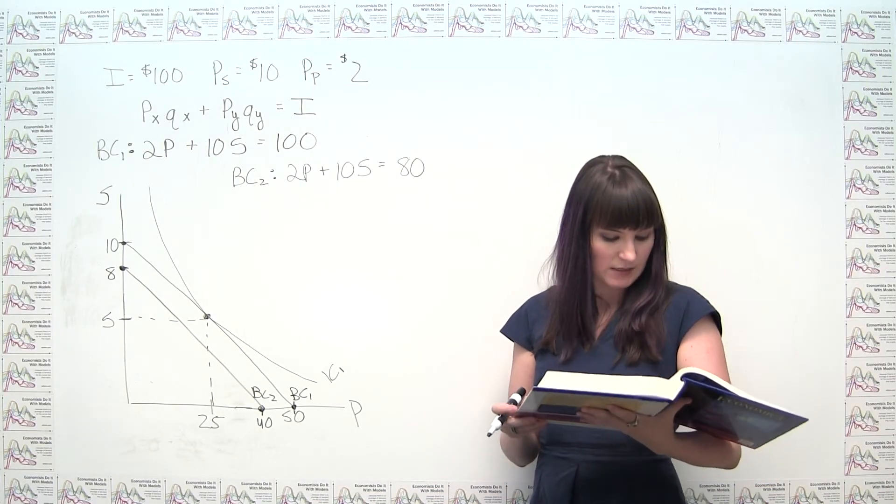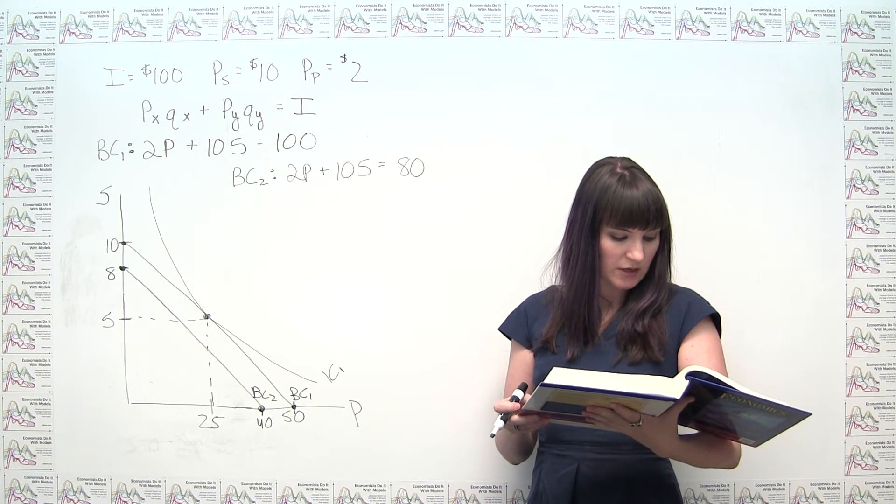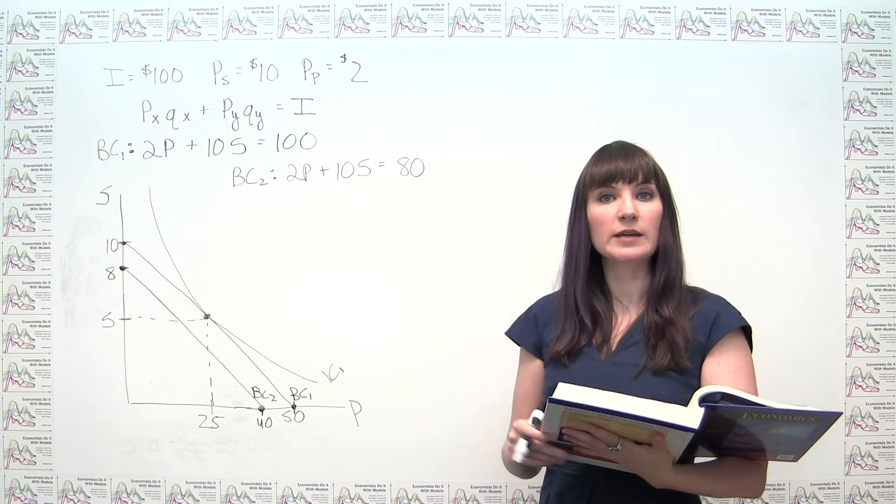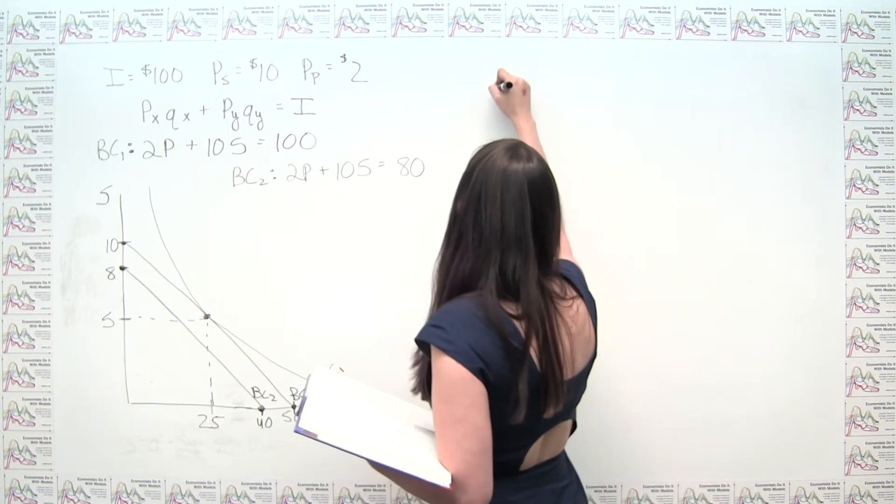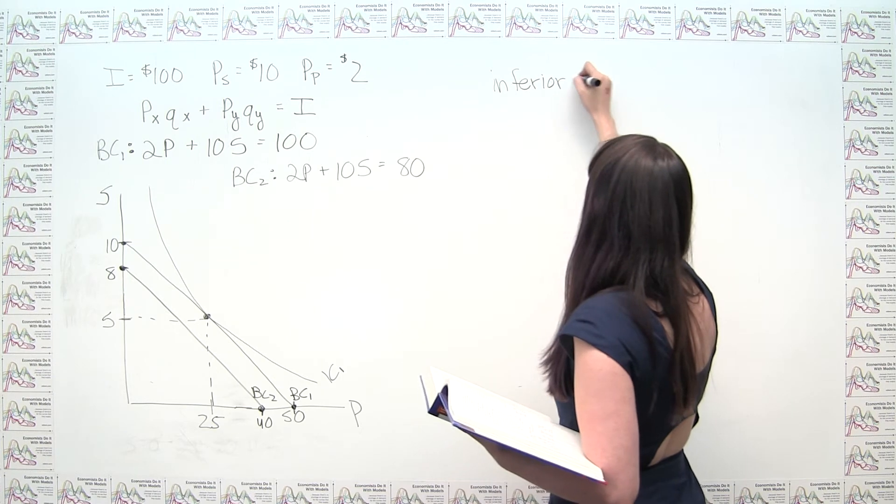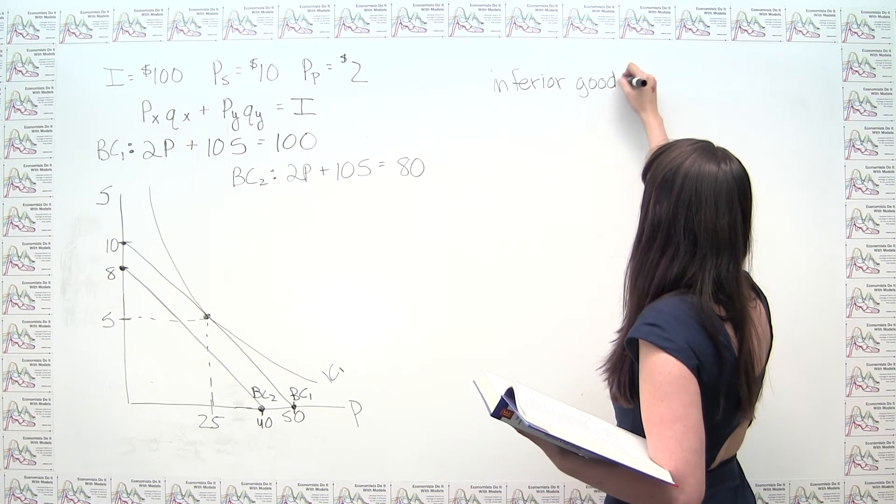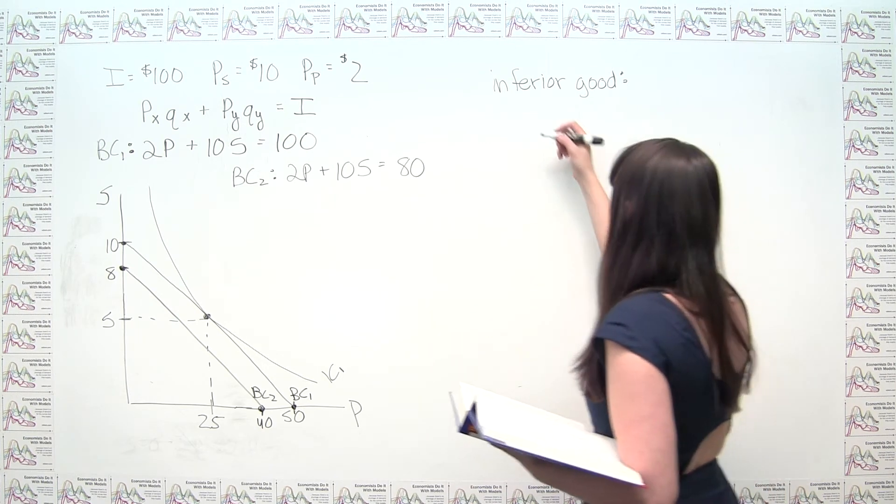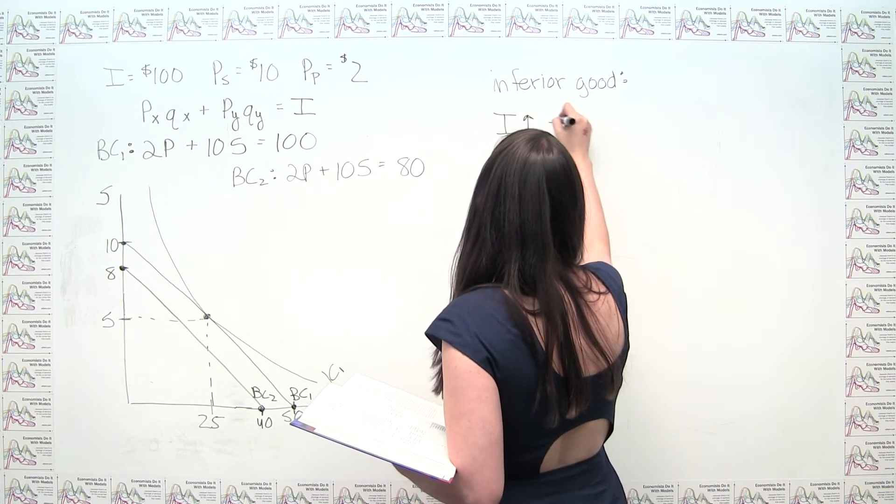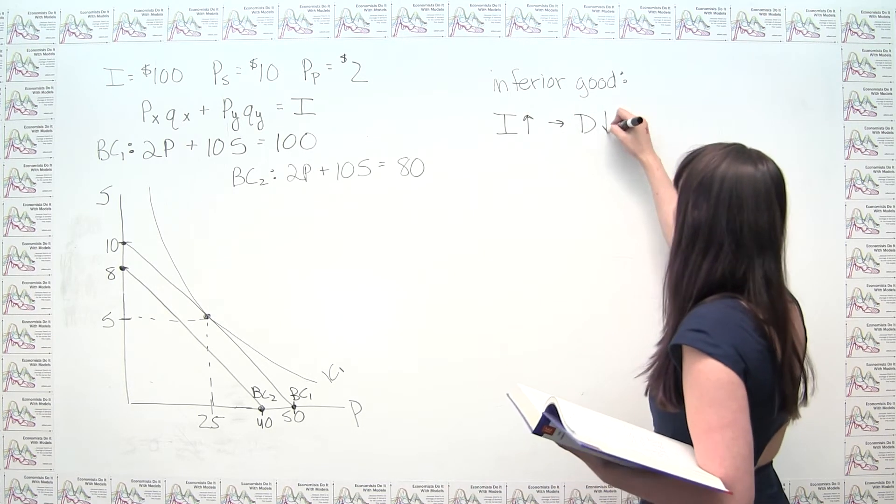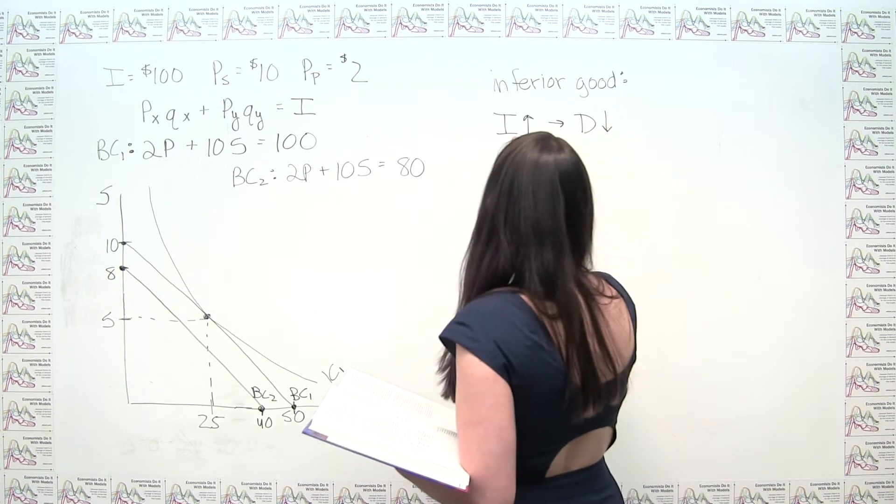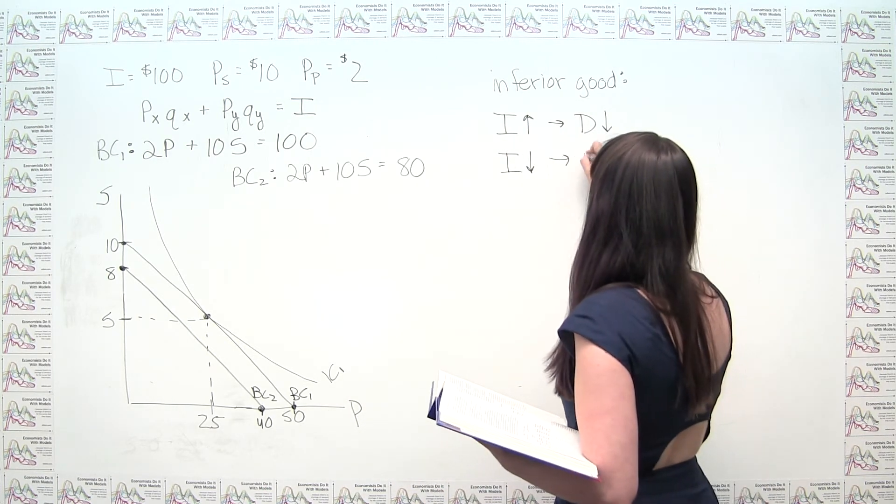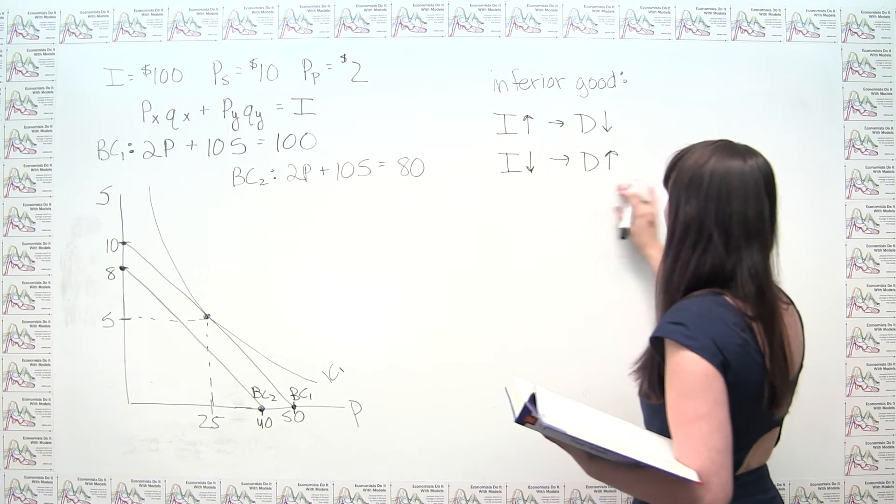Our next instruction says, assume that potatoes are an inferior good to Cameron. So it's worth thinking about what an inferior good is. We said, an inferior good is one where income and demand move in opposite directions. So an inferior good is one where an increase in income is going to lead to a decrease in demand. And similarly, or vice versa rather, a decrease in income is going to lead to an increase in demand.